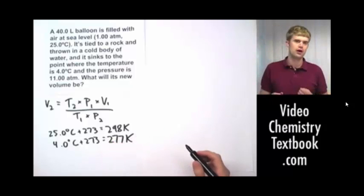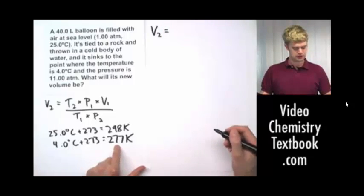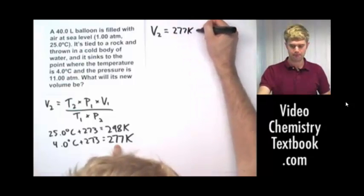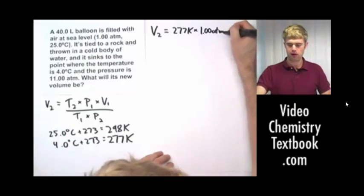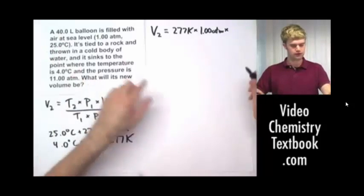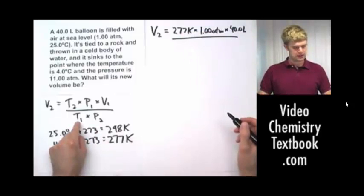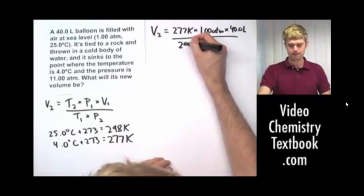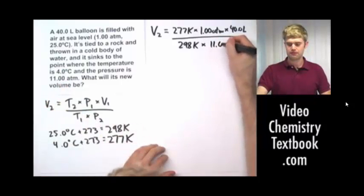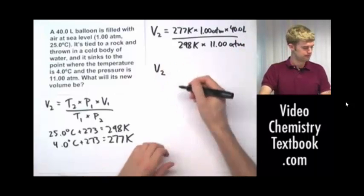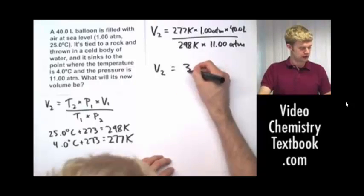Now let's convert the Celsius temperatures to Kelvin. 25.0 degrees Celsius plus 273 gives 298 Kelvin. And 4.0 degrees Celsius plus 273 gives 277 Kelvin. Now substituting into the equation: V2 equals 277 Kelvin times 1.00 ATM times 40.0 liters, divided by 298 Kelvin times 11.00 ATM. Doing that math and rounding to three significant figures gives 3.38.